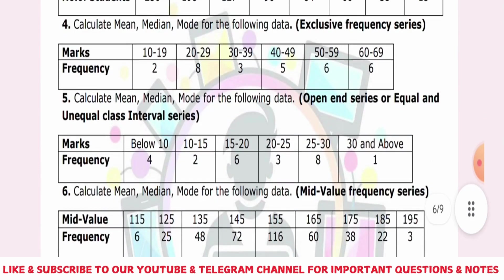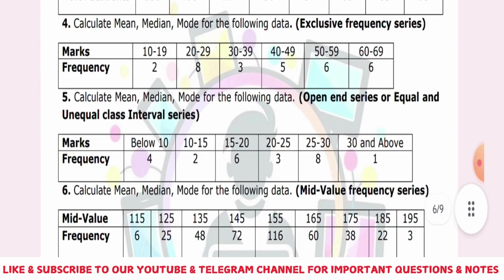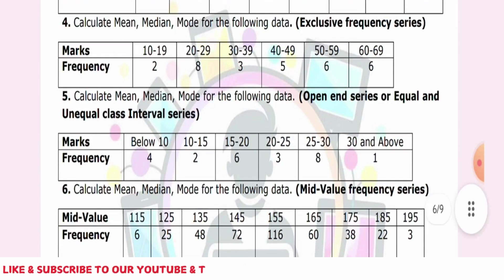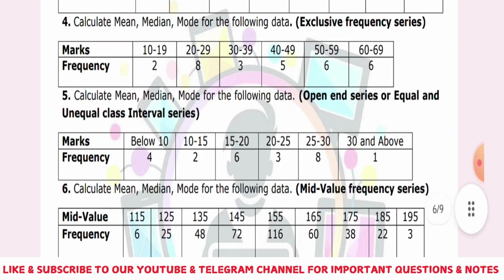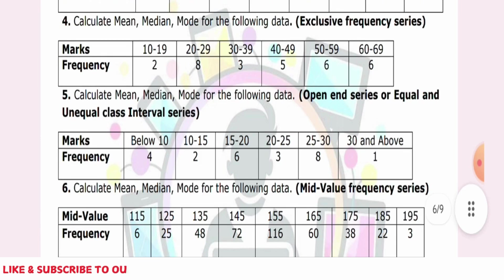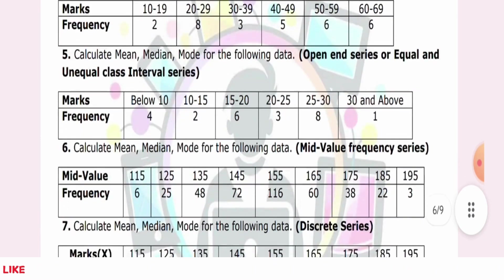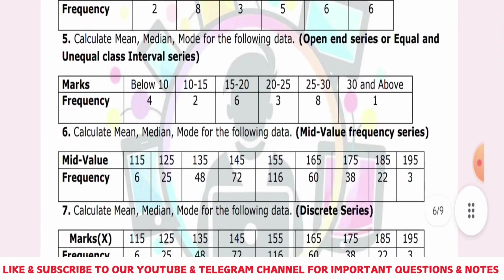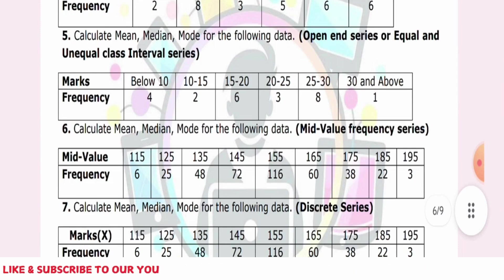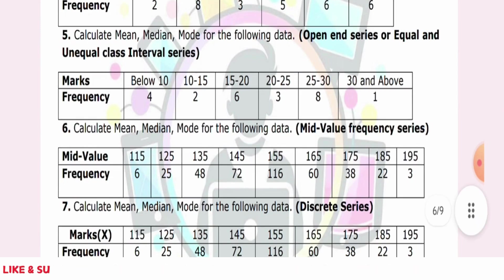We have a mid-value. If you have a direct problem, you have a direct mid-value. If you need a general problem, you can see it as a direct problem. If you need a mid-value, you can see it as a discrete problem. We also have a continuous series problem. There is also a discrete series problem. We have to discuss the marks of the frequency. If you have a mid-value, it is not a discrete series.